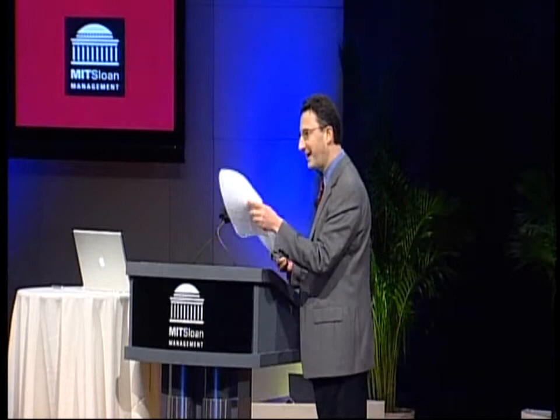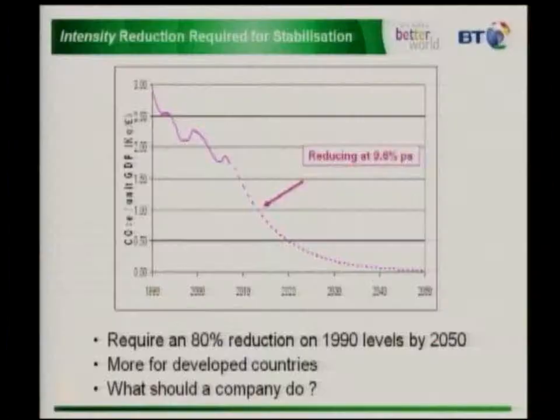During that period, gross domestic product is also forecast to rise significantly. So as well as halving the carbon emissions on an absolute basis from 1990, we need to reduce our carbon emissions relative to gross domestic product on an even greater basis. This is what the graph looks like — reducing carbon emissions per unit of gross domestic product, meaning still allowing the economy to grow, but reducing our carbon emissions sufficiently.